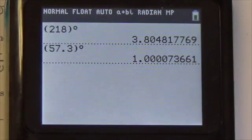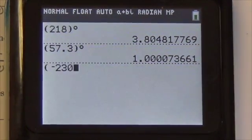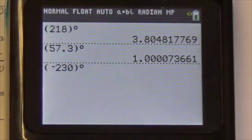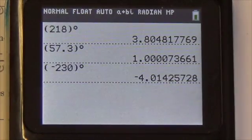Then the last one here is the negative 230. So in parentheses, negative 230. Again, I go into my angle menu to identify that that is a degree. Press enter. Negative 4.0.